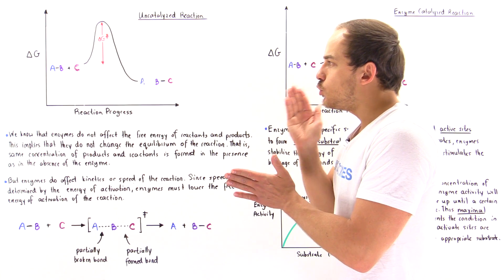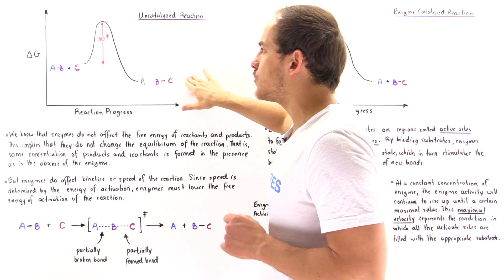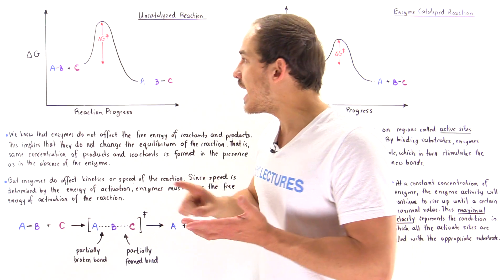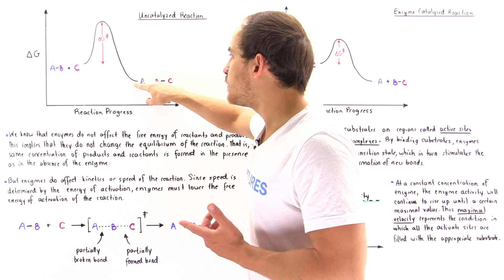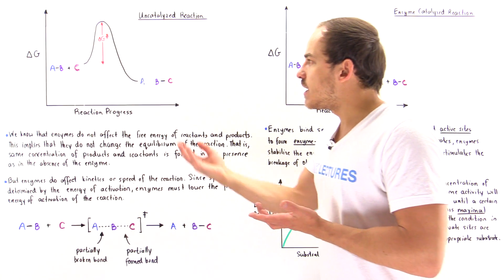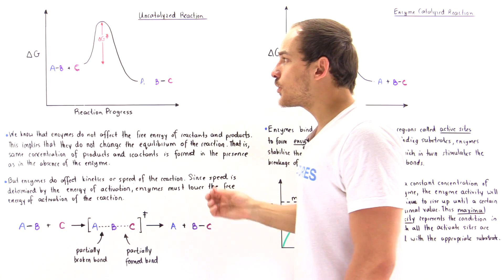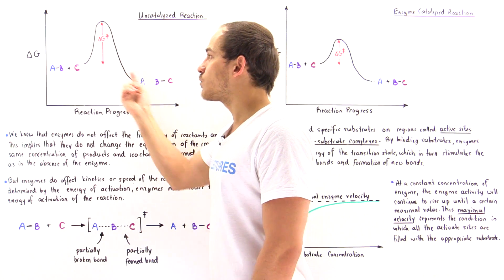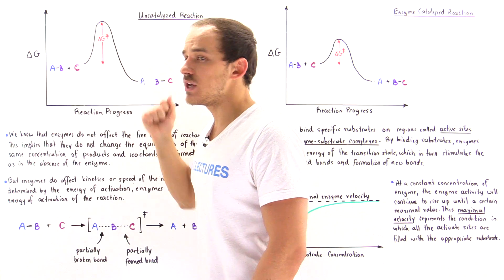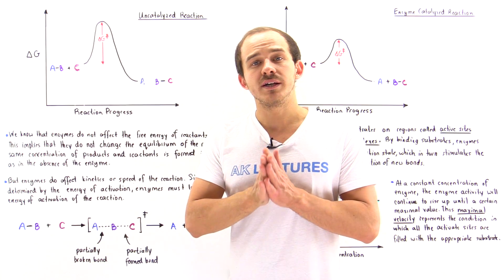Enzymes do not affect the free energy value of the products, nor will they affect the free energy value of the reactants. Since the energy values of products and reactants are not affected, the delta G — the difference between the two — will not be affected as well. Because it is the difference in energy between products and reactants that determines the concentrations at equilibrium, enzymes will not affect the concentrations of products and reactants at equilibrium.